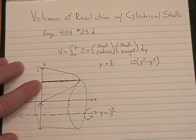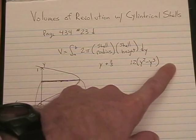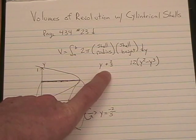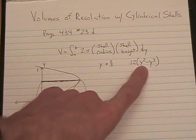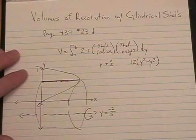There is no left-hand boundary other than x equals 0, so it's just minus 0 here. So, we have our shell radius, we have our shell height, and we're ready to do the integral.